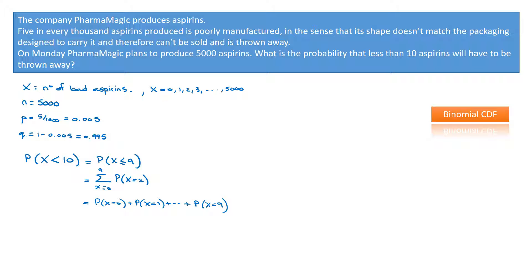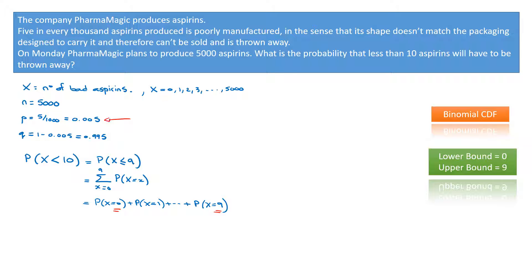Using the binomial CDF, we're typically asked for a lower bound and an upper bound. The lower bound is 0 and the upper bound is 9. We also enter the probability of success, which is 0.005. Plugging these into the calculator, we quickly find that the probability of X being less than 10 equals 0.000216. That's how we calculate probabilities using the cumulative distribution formula — make sure to find the binomial CDF function on your calculator, as exam questions very frequently involve thousands of trials.